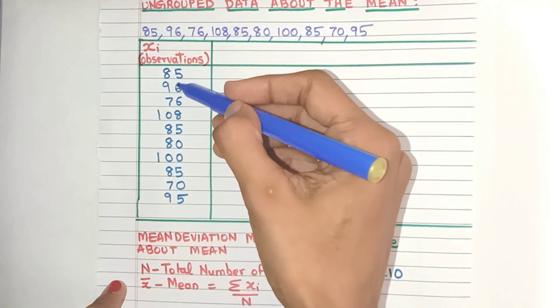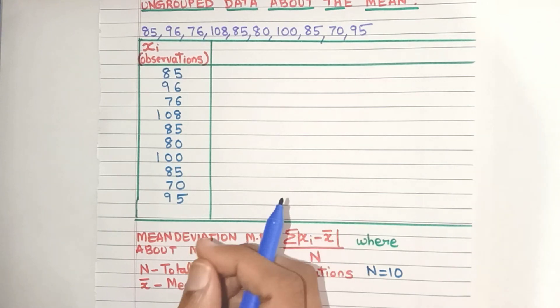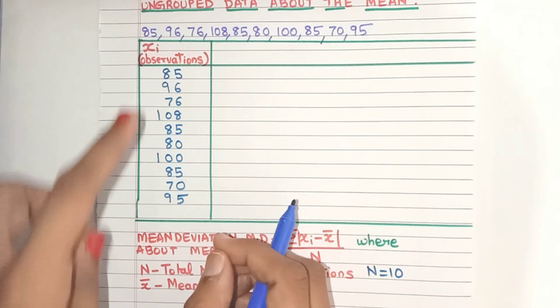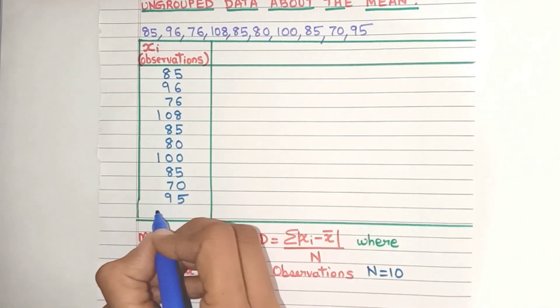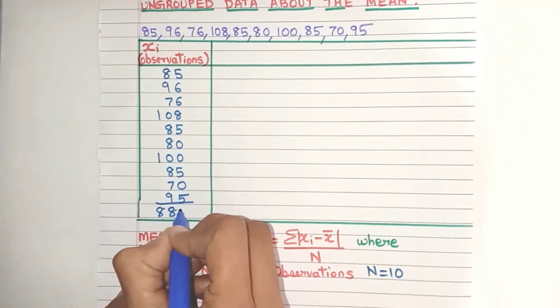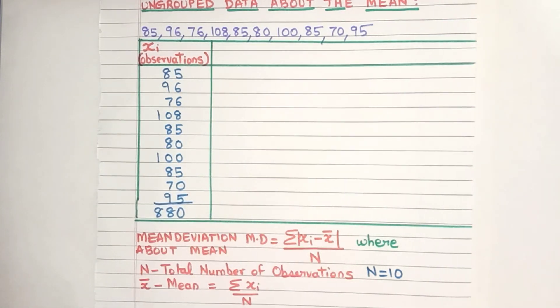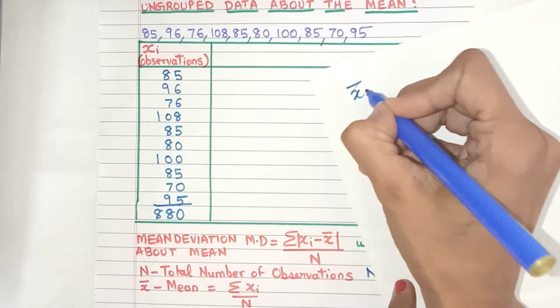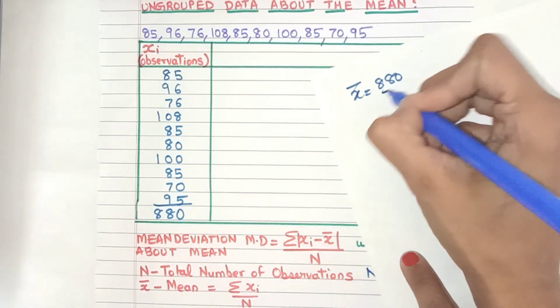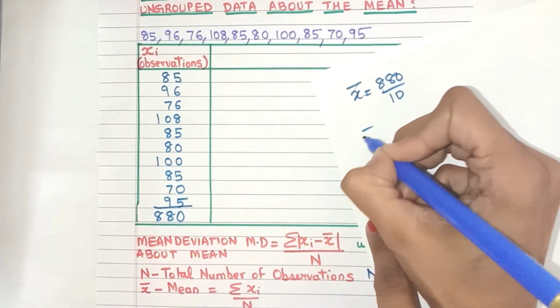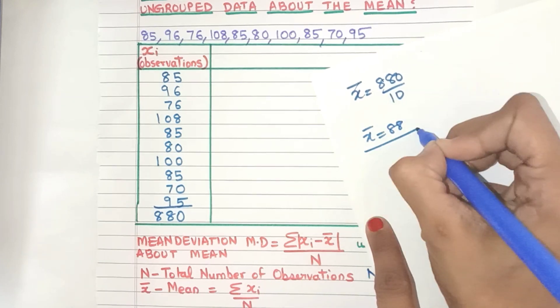That's why you had to write the digits one below the other so that you can easily add them up. To save time I've already added them up. It comes to 880. So Σxi is 880. Now let's find out the mean. Mean is nothing but 880 divided by n which is 10. That means the mean of this data is 88.